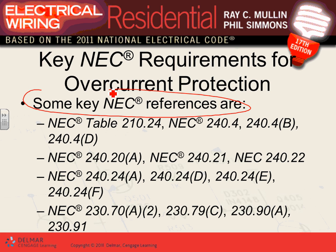A number 14 conductor — you cannot land more than a 15-amp fuse on it. Section 240.4(D) tells you that number 10, 12, and 14 conductors have limitations of 30, 20, and 15 amps respectively.